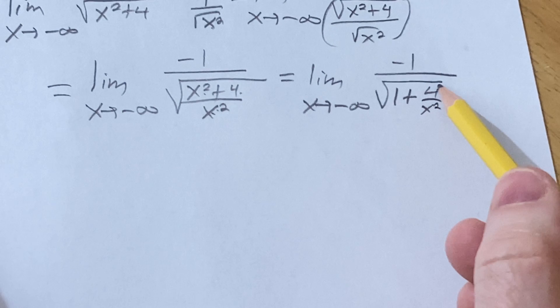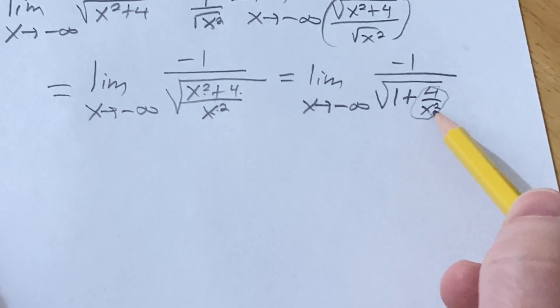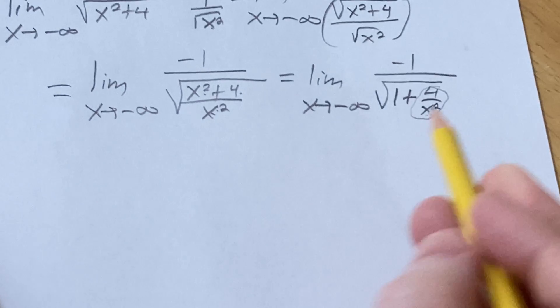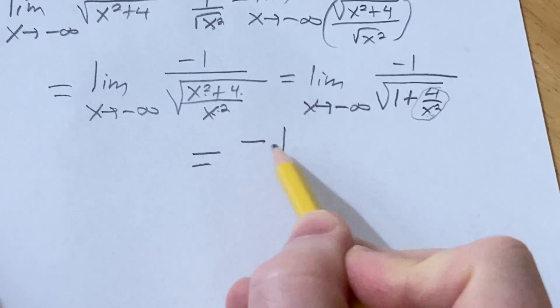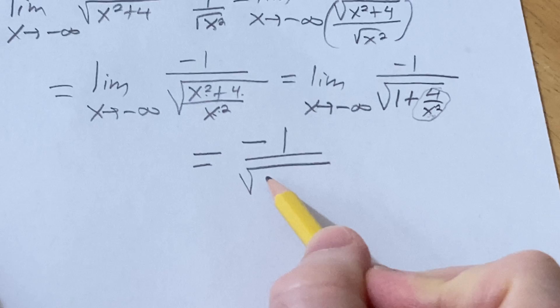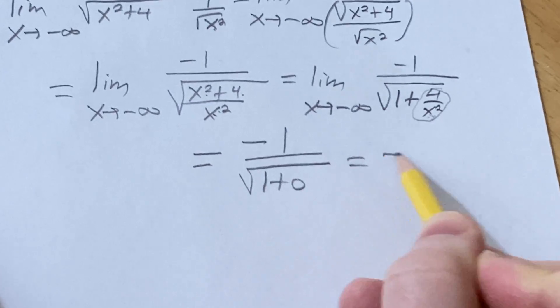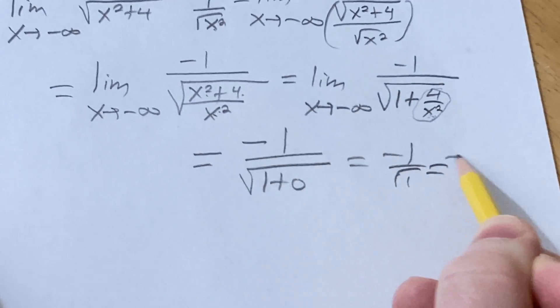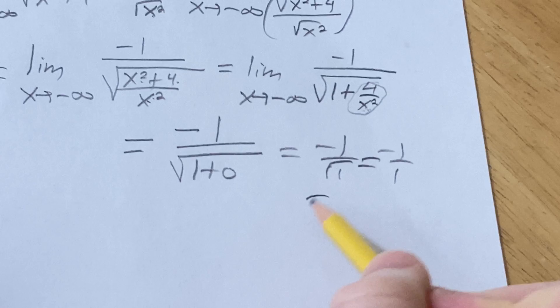And now we can see that as x approaches negative infinity, this piece here is going to approach 0 because the bottom is getting bigger and bigger and bigger. So now we drop the limit sign. It's negative 1 over the square root of 1 plus 0. It's negative 1 over the square root of 1, which is negative 1 over 1, which is just negative 1.